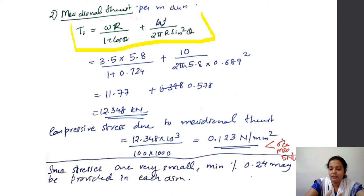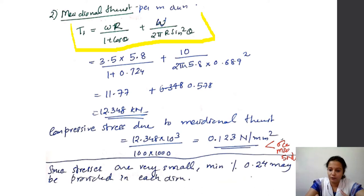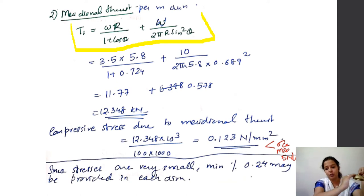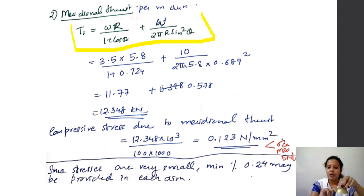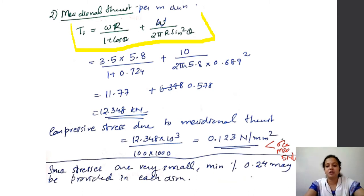We are using Fe 415 steel. The minimum percentage of steel for Fe 415 is 0.12% per direction. Reinforcement is provided in both directions — circumferential and meridional — so 0.12% each direction, totalling 0.24%.